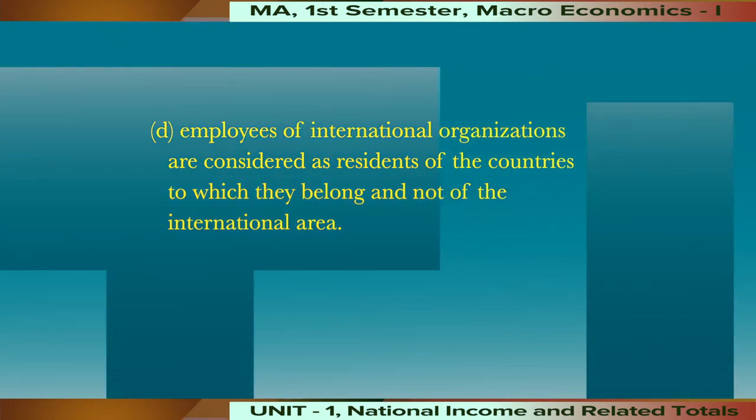For example, an American working in a UNO office located in India will be treated as a normal resident of America. However, if the employees are working for more than one year in such international institutions, then they become the normal residents of the country in which such institutions are located. In the given example, if the American is working in the UNO office in India for more than one year, then he will be treated as a normal resident of India.